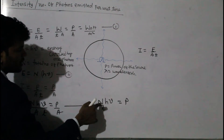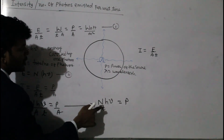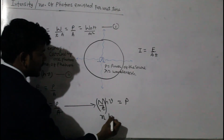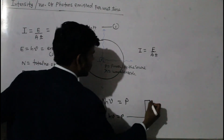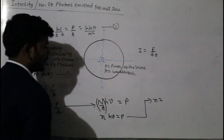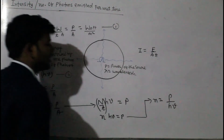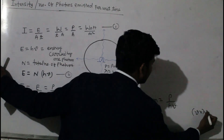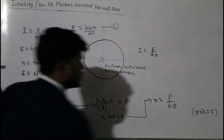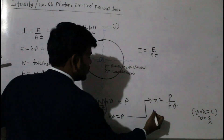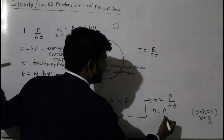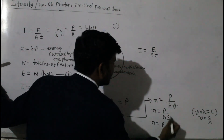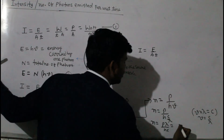Since N is the number of photons and T is the time, we define n as the number of photons emitted from the source per unit time, represented by small n. So n·H·nu equals P, and therefore n equals P divided by H·nu. We have the relationship frequency times wavelength equals speed of light C, so frequency equals C by lambda. Replacing this, n equals P divided by H into C by lambda.